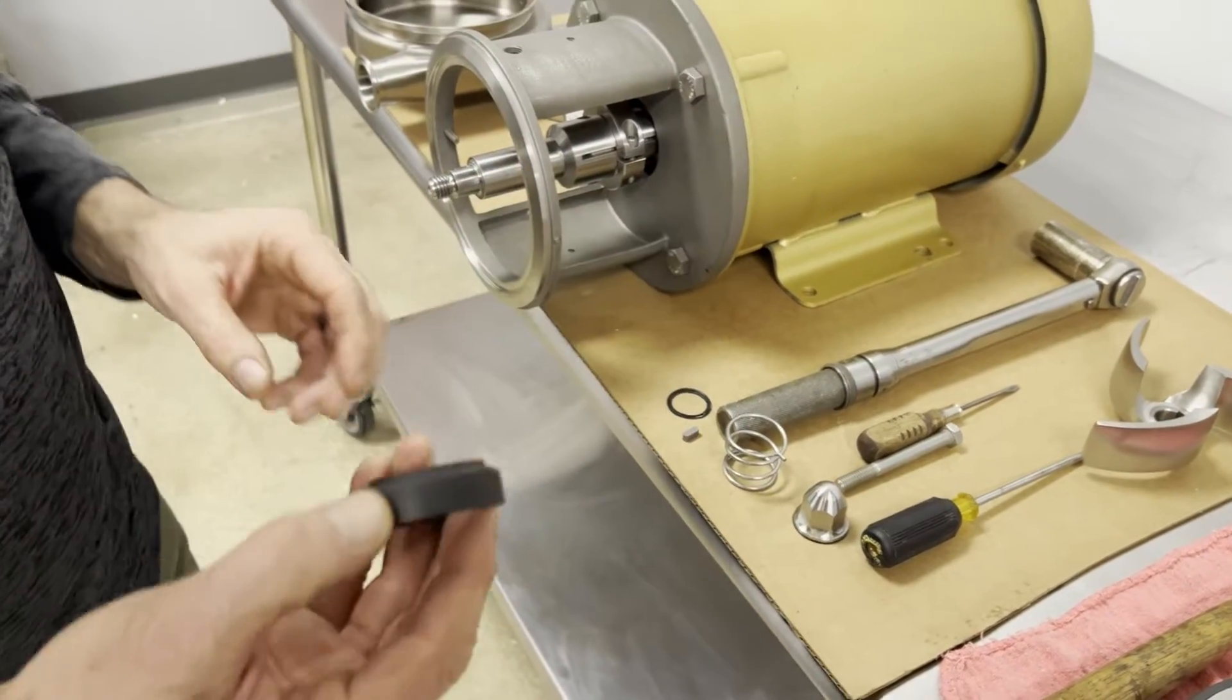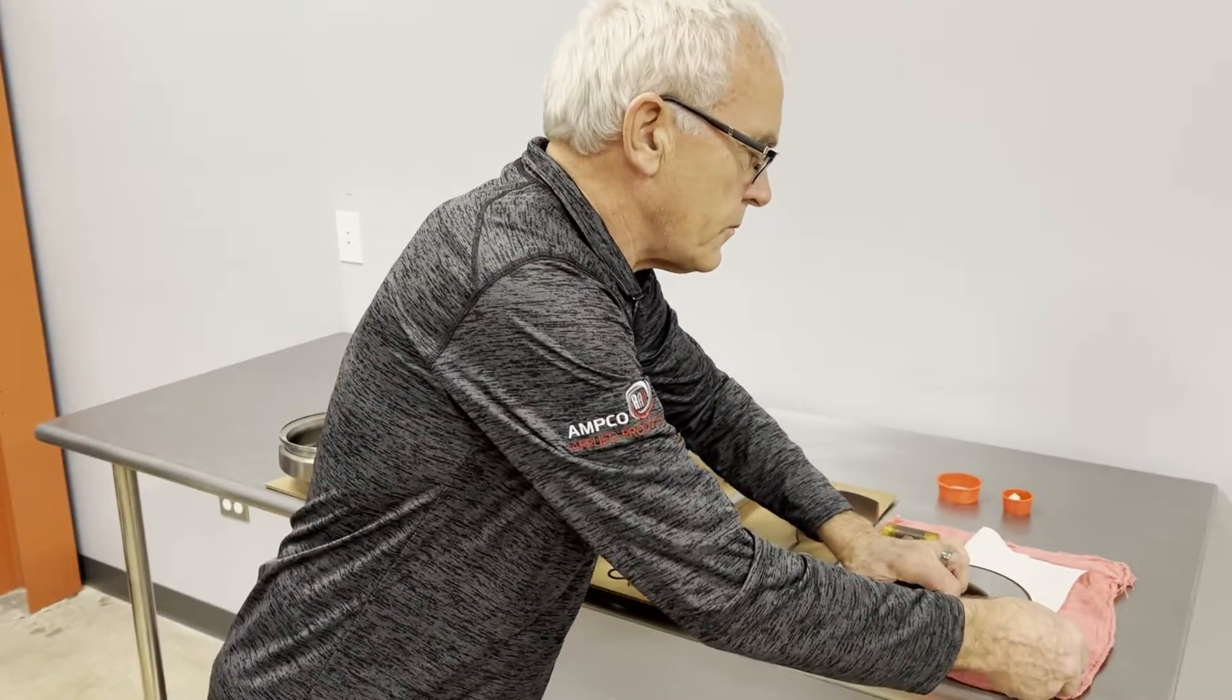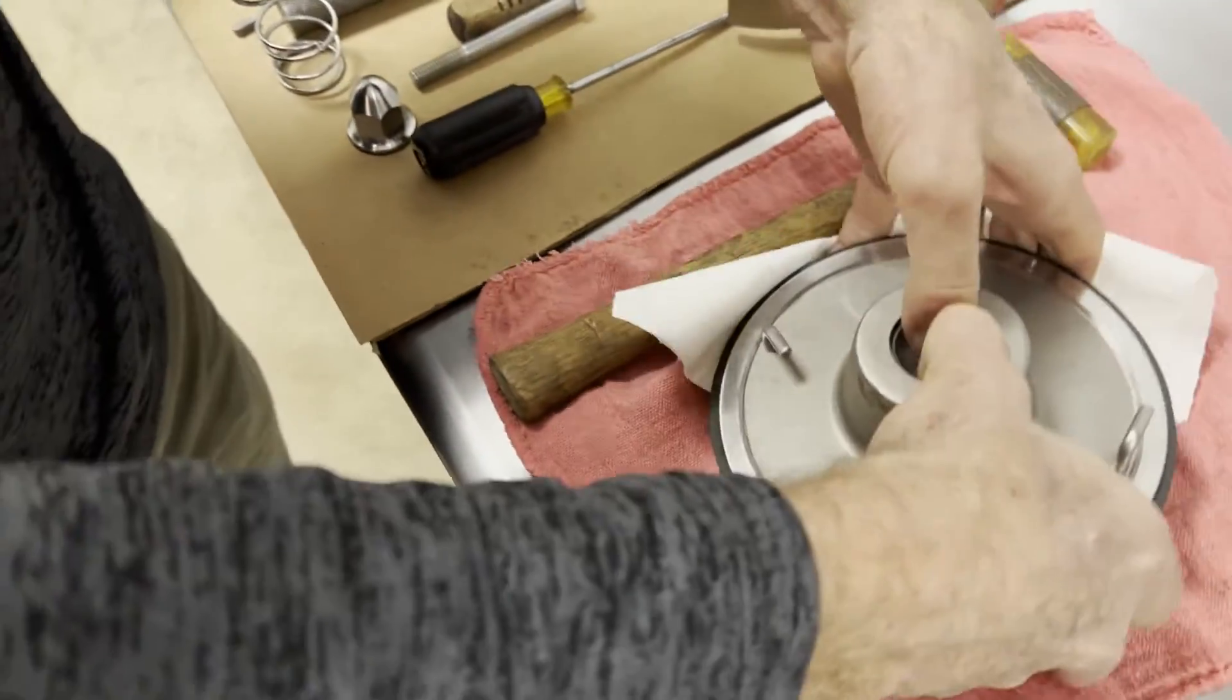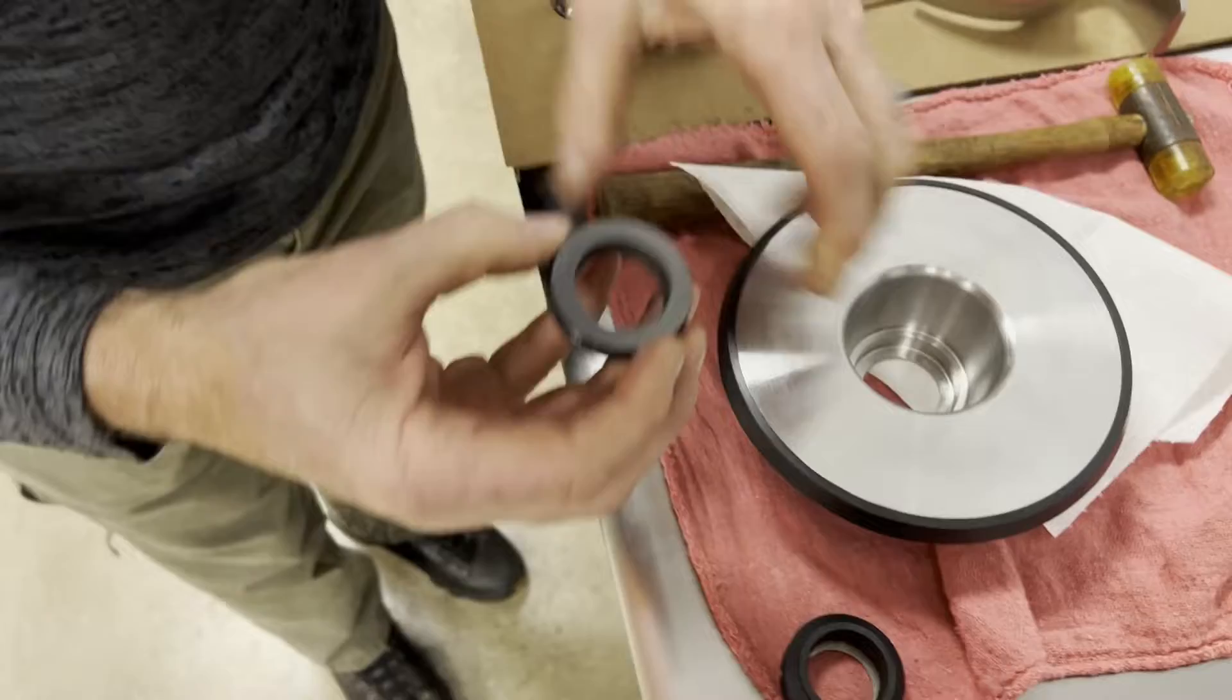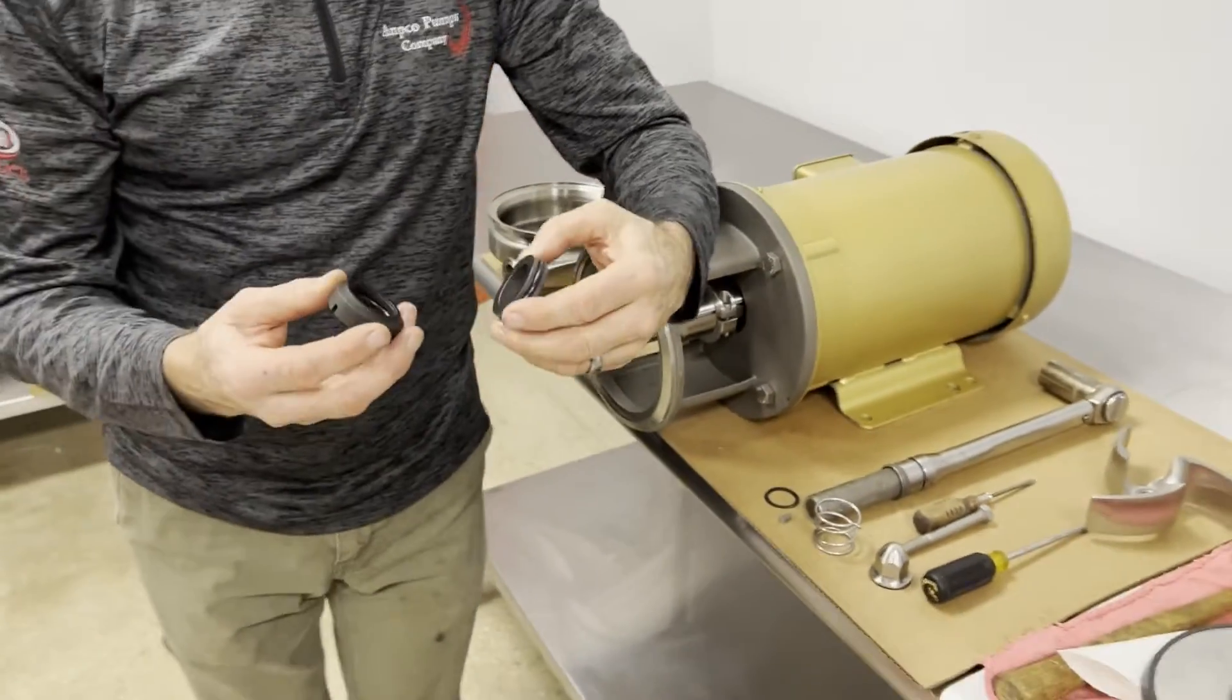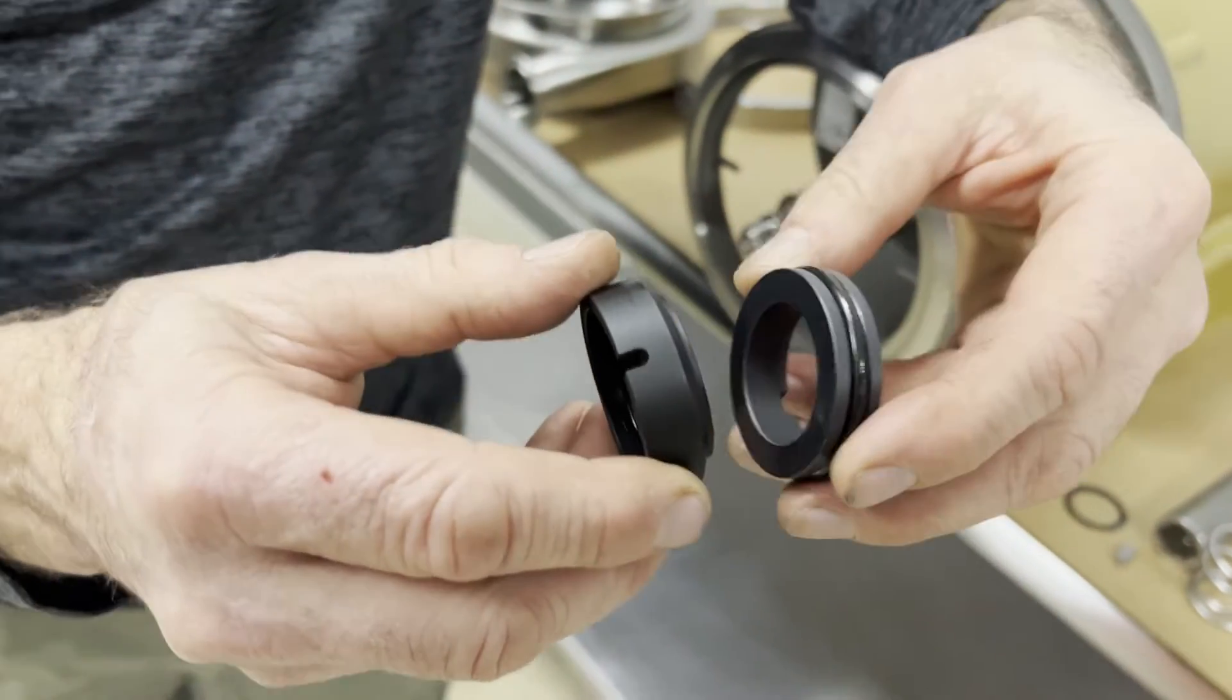So at this point I'm going to talk about why these seals do fail. Inside the back plate is also what we call our stationary seal. When the pump is running and pumping a product, there's a natural fluid film on these seal faces. This one's turning, this one's stationary.